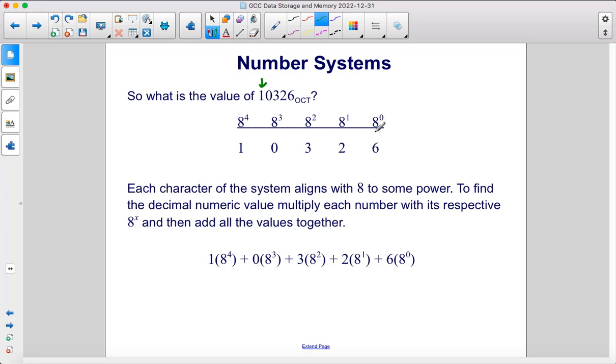Each character of the system aligns with 8 to some power. To find the decimal numeric value, you multiply each digit with its respective 8 to the x power, and then you add them all together. So 1 times 256 plus 0 times 128, which is just 0, plus 3 times 64, plus 2 times 8, plus 6 times 1, and you add those all together.